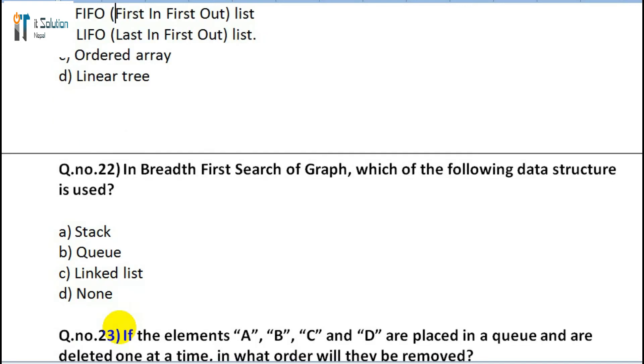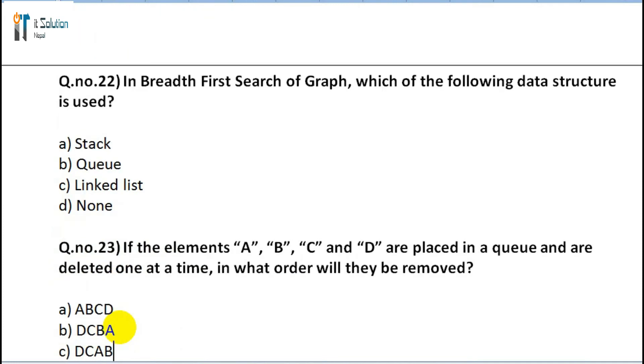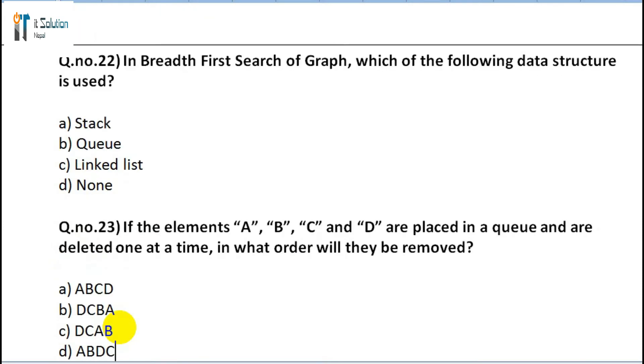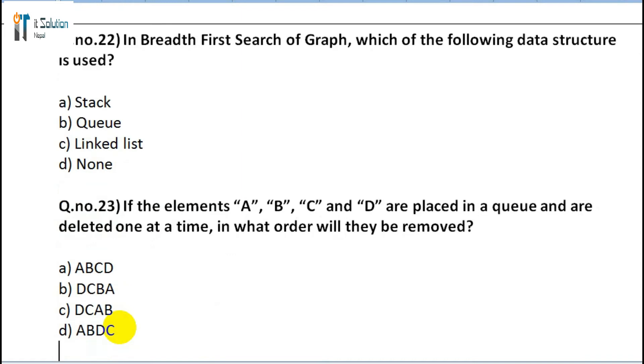Question 22: In breadth-first search of a graph, which of the following data structures is used? A) Stack, B) Queue, C) Linked list, D) None. Question 23: If the elements A, B, C, and D are placed in a queue and are deleted one at a time, in what order will they be removed? A) ABCD, B) DCBA, C) DCAB, D) ABDC.